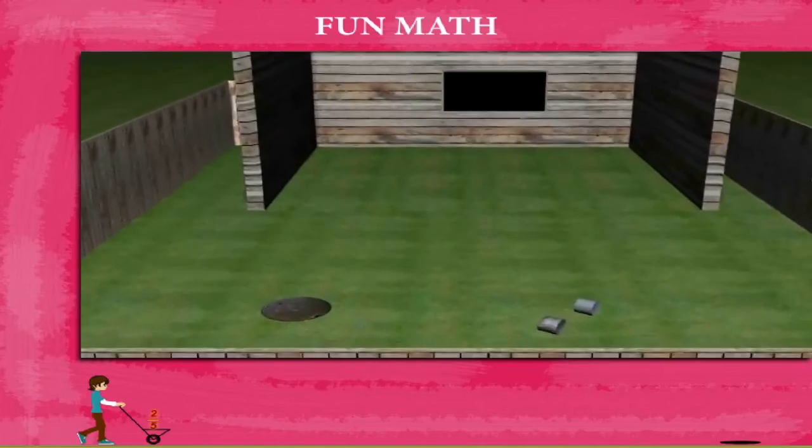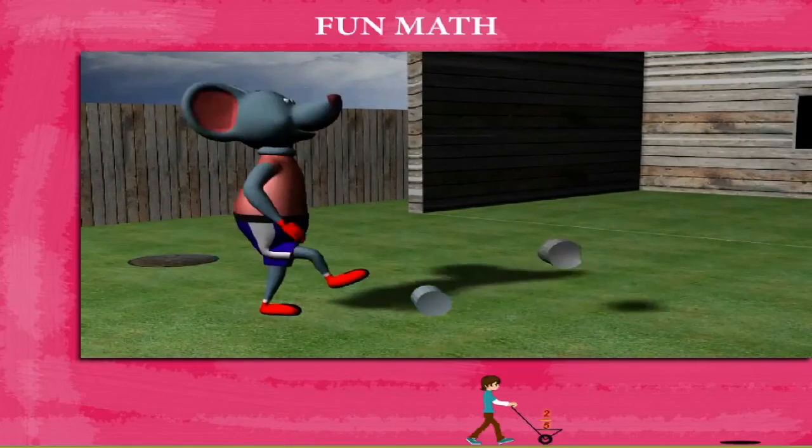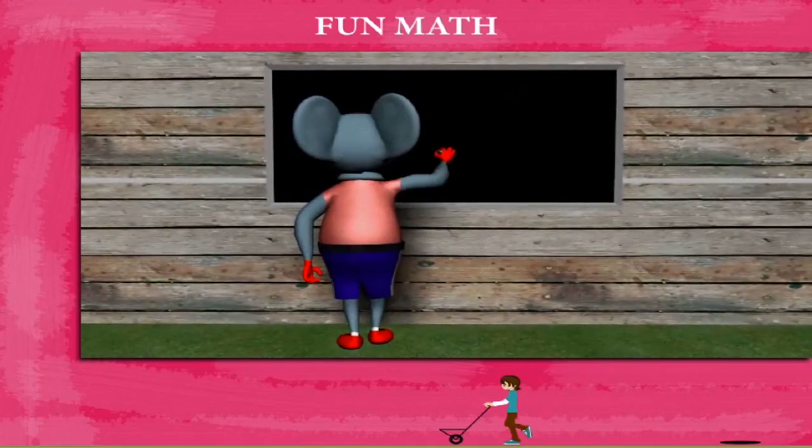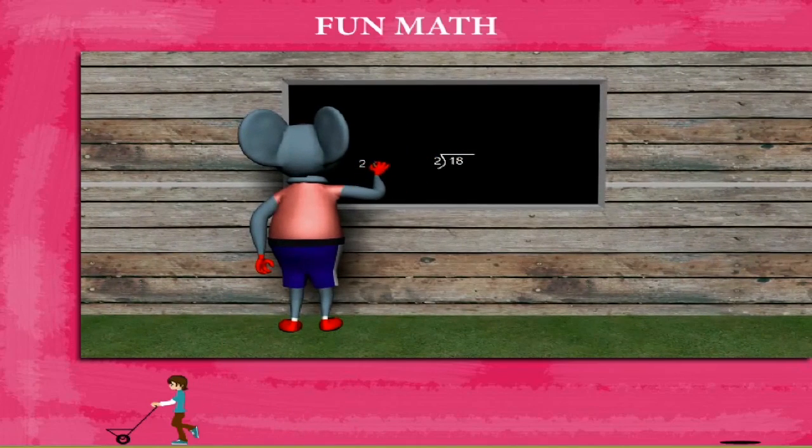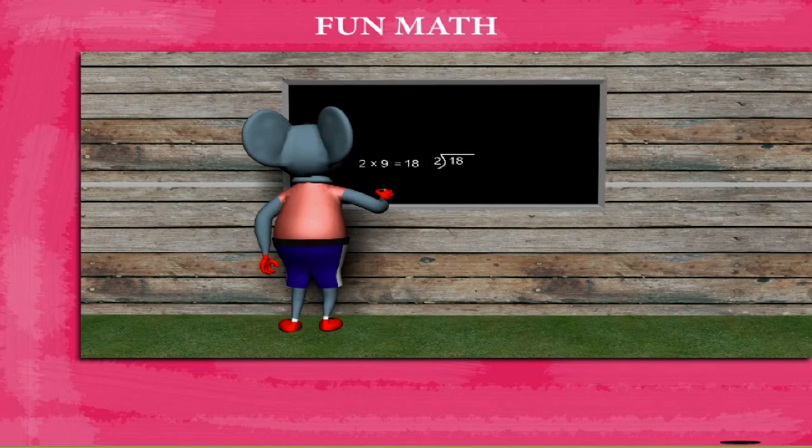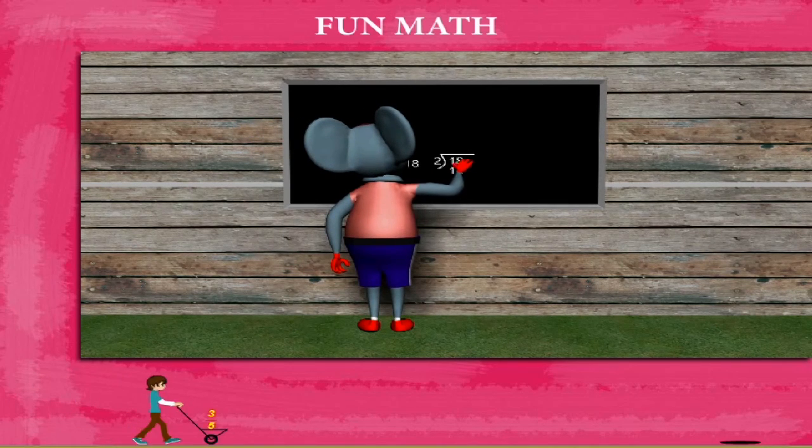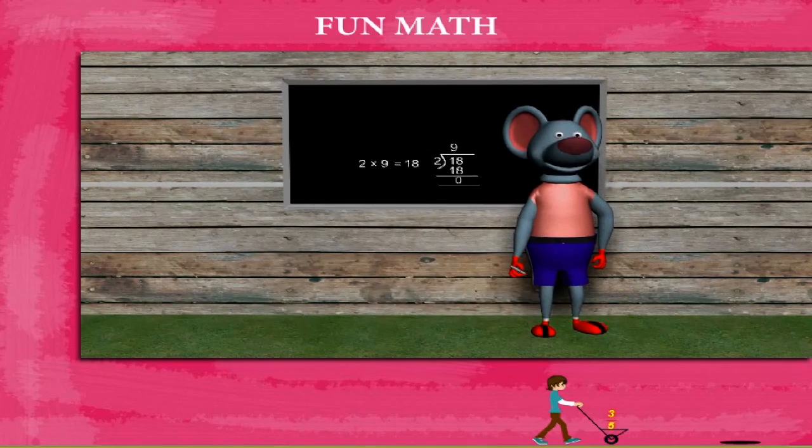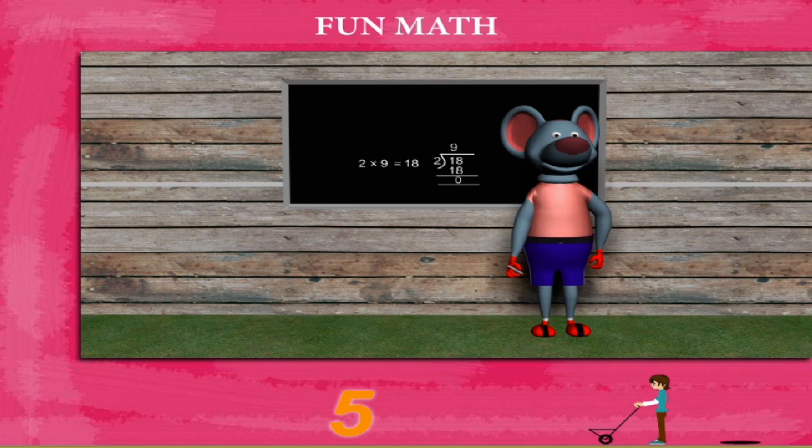Fun Math. Robby Mouse is in a playful mood. He enters the enclosure, sees 2 cans, kicks one over the other, and walks to the board. He writes 18 divided by 2. He remembers the tables and writes 2 nines are 18. He gets the answer, so he writes 18 in the division quotient and writes 9 as the quotient. Subtracts and gets 0. Robby enjoys math. Multiplication and division are the opposite of each other.